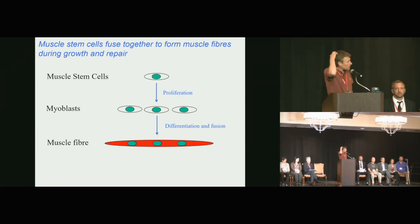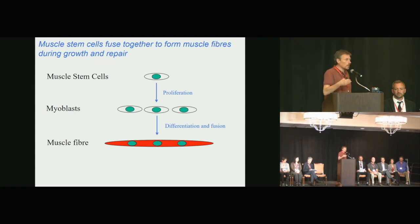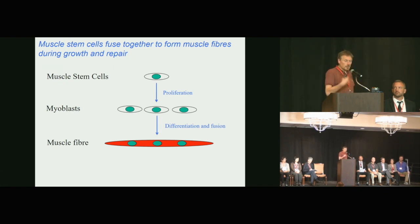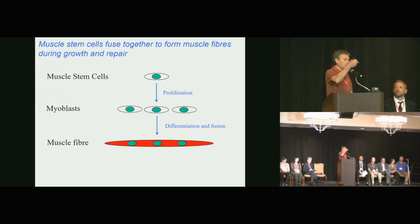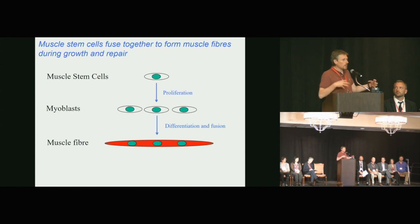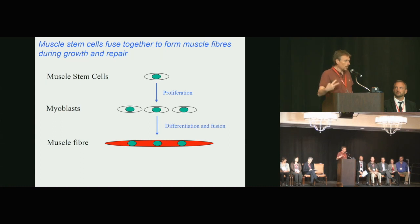Muscle is made from muscle stem cells. Muscle is slightly unusual in that lots of cells fuse together to make a muscle fiber. When they fuse, they share their cytoplasm but donate their nuclei. So a muscle fiber is essentially one very large cell that has hundreds of myonuclei controlling it because it's so big.